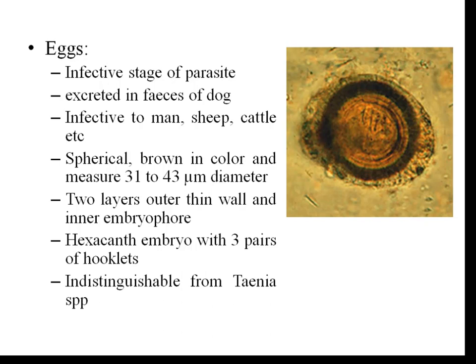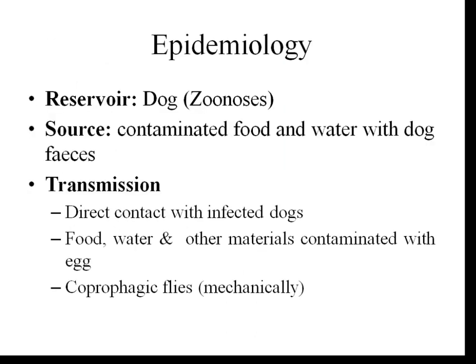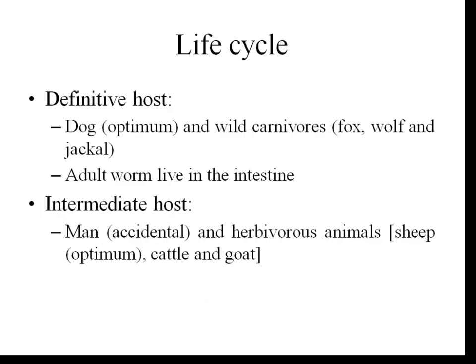The dog acts as a reservoir for the infection, making this an important parasitic zoonosis. The infection is acquired through contaminated food and water with dog feces, or it can be mechanically transmitted by coprophagic flies. The life cycle involves two hosts: a definitive host, which is the dog and other wild carnivores like fox, wolf, and jackal.